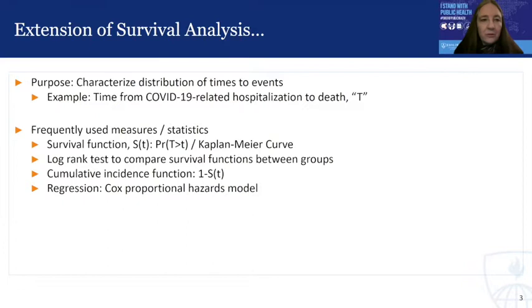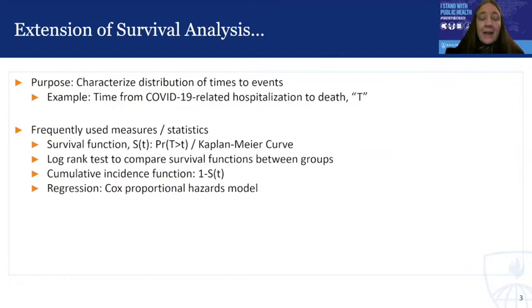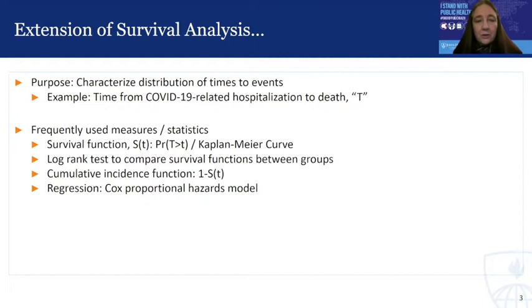Continuing through the bullets: the log rank test is a technique by which we can conduct inference to compare survival functions between groups — men and women, different race ethnicity groups, people of different ages, etc. What is commonly called the cumulative incidence function is defined as 1 minus S of T, which is just the cumulative proportion who fail — who die, for example — by any given time. And if we wish to perform regression analyses to study times to events in terms of covariates, the most common approach is the Cox proportional hazards model.